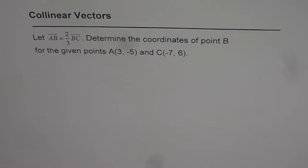Let us explore collinear vectors. Let AB equals 2 over 3 of BC. Determine the coordinates of point B for the given points A and C.